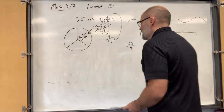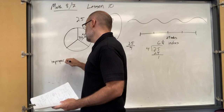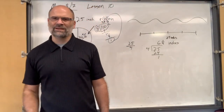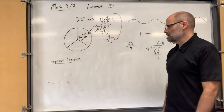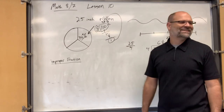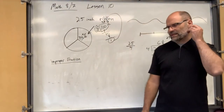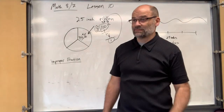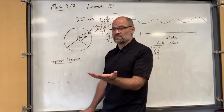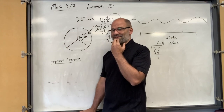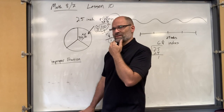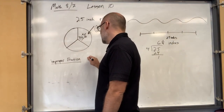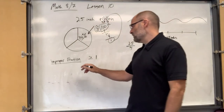Let's define this — we've mentioned it already today. What's an improper fraction? It sounds like a badly-behaved fraction, but that's not what it means. An improper fraction is greater than or equal to one. What makes it improper is that the top number is bigger than — or equal to — the bottom number.